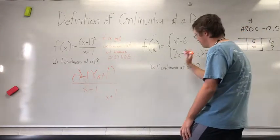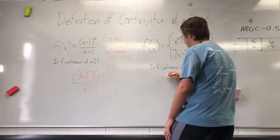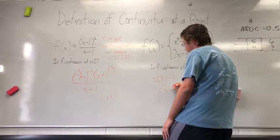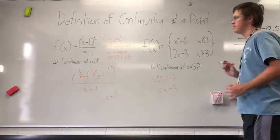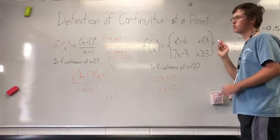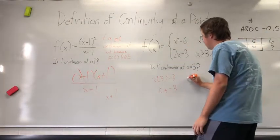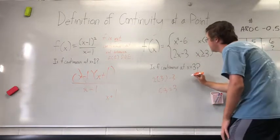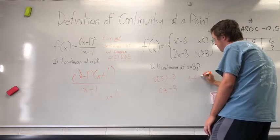Plugging x equals 3 into 2x minus 3: 2 times 3 minus 3 equals 6 minus 3, which equals 3. Now we calculate the left-hand limit using the other piece of the equation. Because it says less than, this applies when x is less than 3 — that left approach. Plugging in 3: 3 squared is 9, minus 6, equals 3.